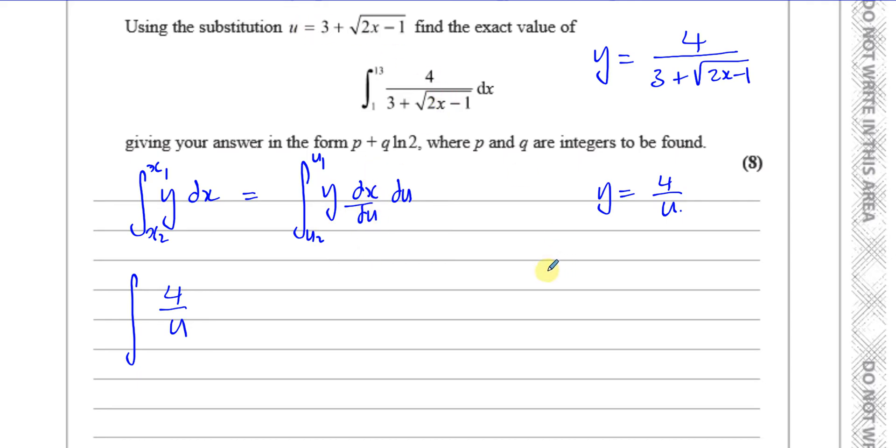Now I've got to find what dx/du is in terms of u. So first of all, let's write down what they gave us: u equals 3 plus the square root of 2x minus 1. Now what I could do is I could find du/dx and then write the reciprocal, but that's going to give me something really complicated because I've got here 2x minus 1 to the power of a half.